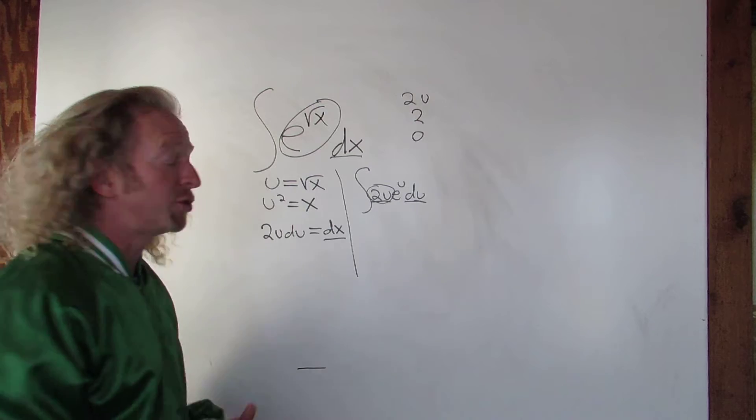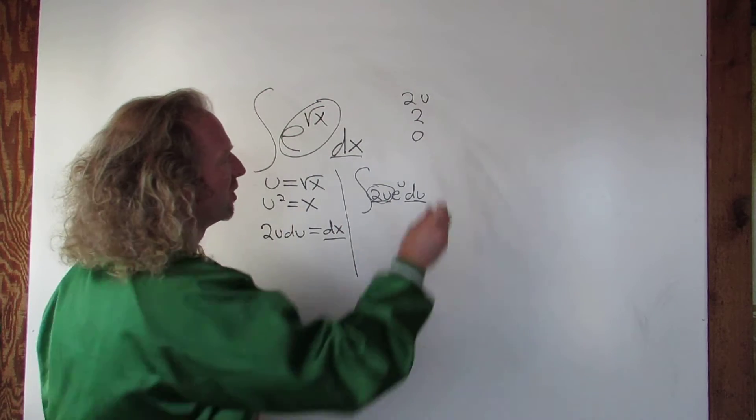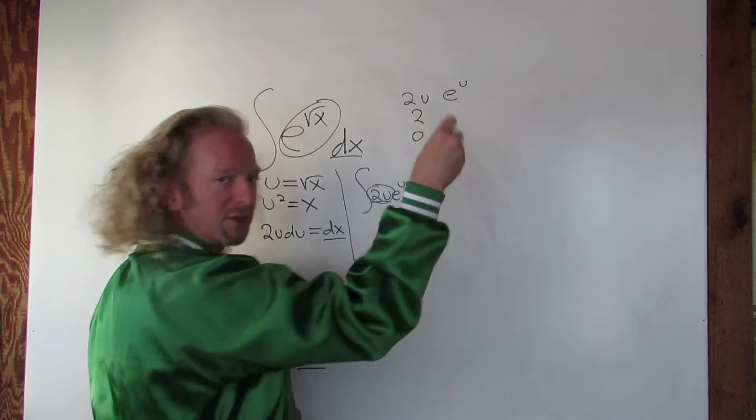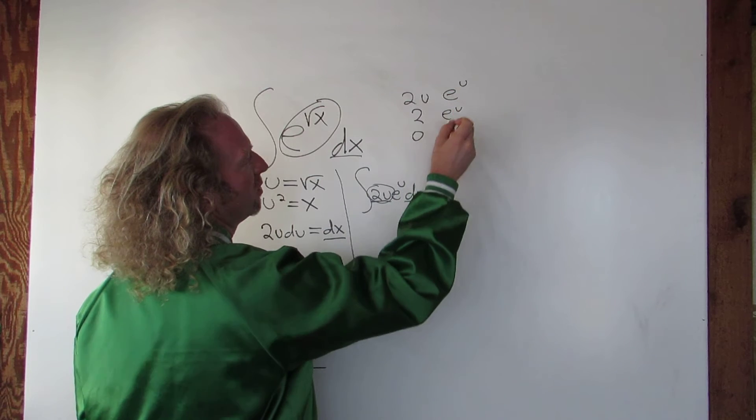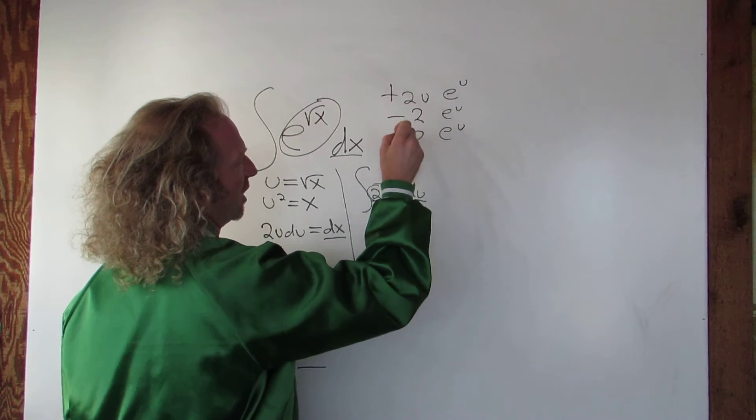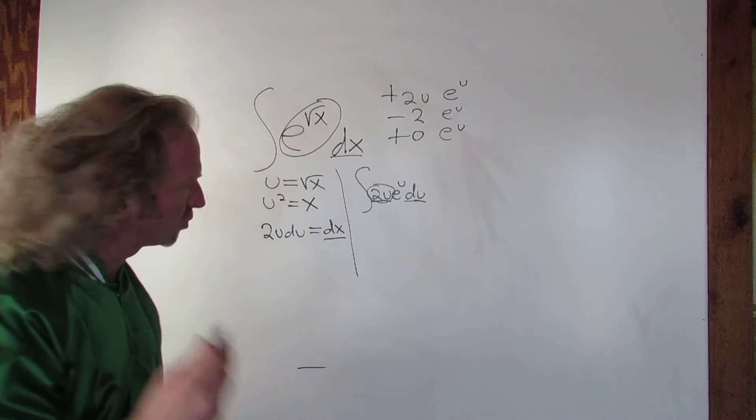Then you pick the piece you're going to integrate. So e to the u. And then you just keep integrating it. So e to the u, e to the u. You do plus, minus, plus. You always start with plus and then you alternate and then you just draw arrows.